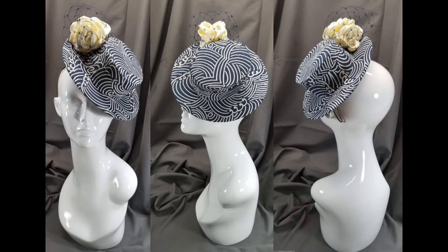A boater consists of a covered crown attached to a flat brim at the head size line. You can make them to fit your head or small and mounted to a headband. For this demonstration I'll be making a small version.